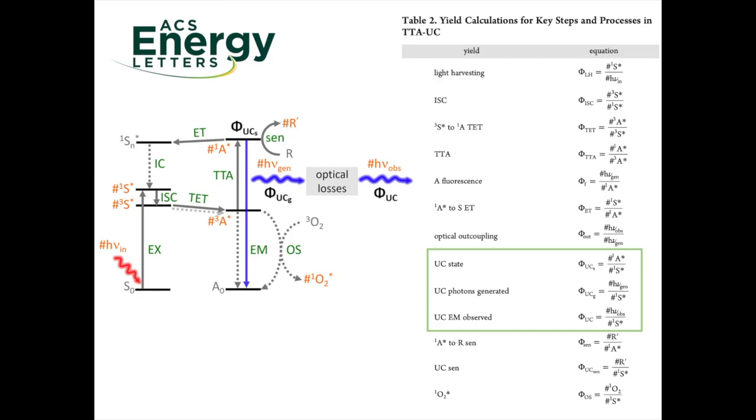First of all, we have defined phiUC as the measured TTA-UC emission quantum yield. That is the number of upconverted photons observed divided by the number of photons absorbed. Because of the 2 to 1 photon nature of TTA-UC, the maximum theoretical value of phiUC is 0.5 or 50 percent.